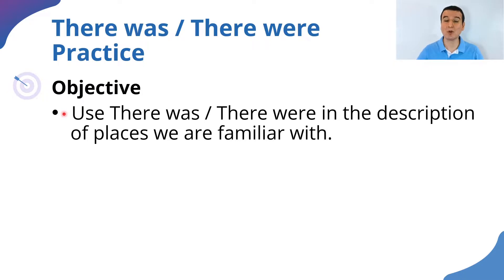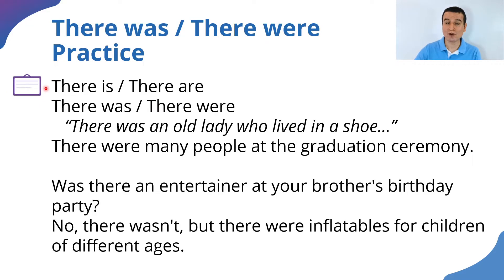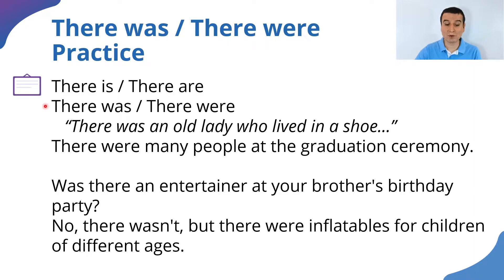We are going to use there was and there were to describe a place that you know, that we are familiar with. Remember that so far we have studied when we use there was and there were. We use there was for singular and there were for plural — the same rules that apply to there is and there are in the present form. Let's keep that in mind.